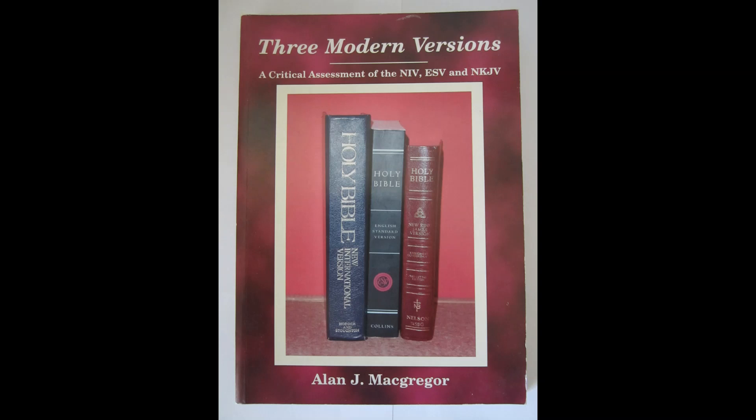Content, Part 2. In Part 2, Chapters 5 through 8, the author provides a detailed review of the three modern English translations — the NIV, ESV, and NKJV — and concludes with a review of the King James Version. Chapter 5: the NIV, or New International Version. Here is a summary of McGregor's critique.